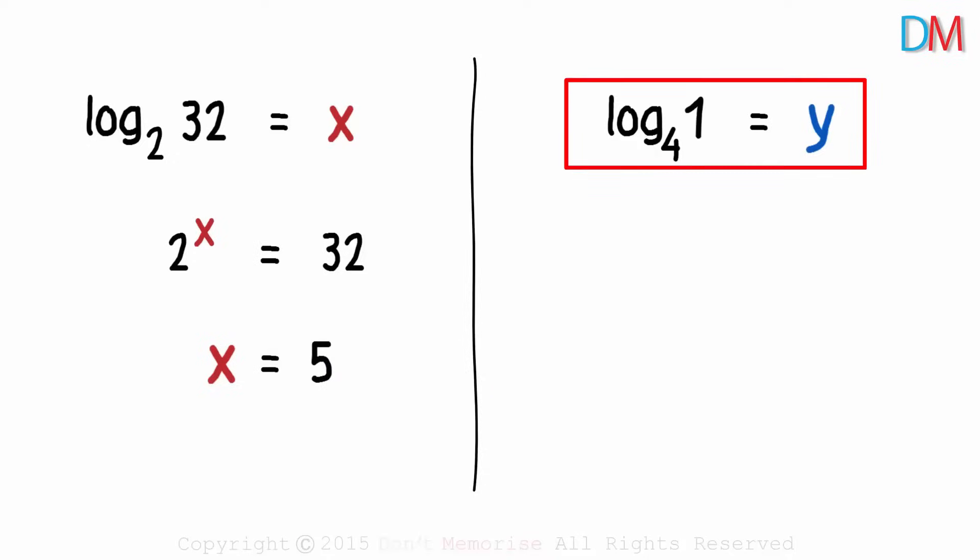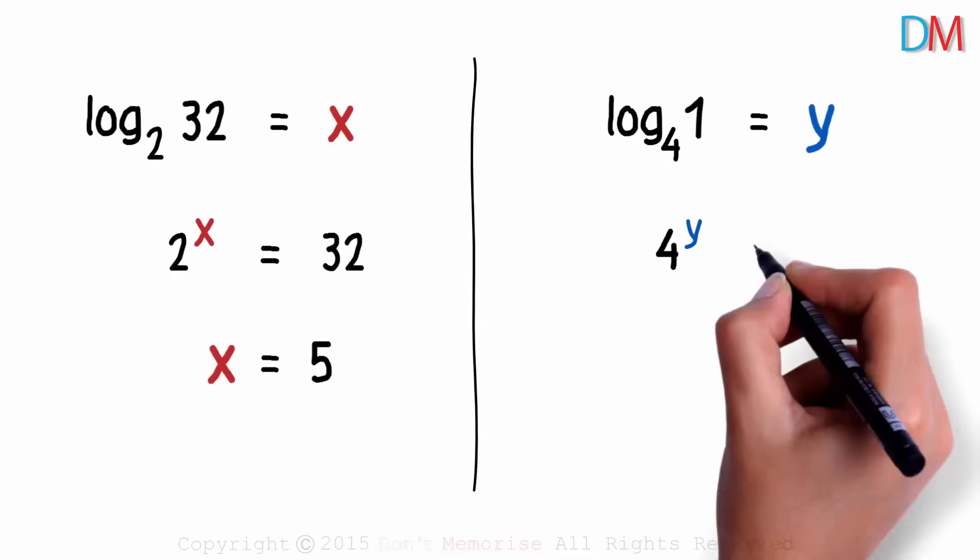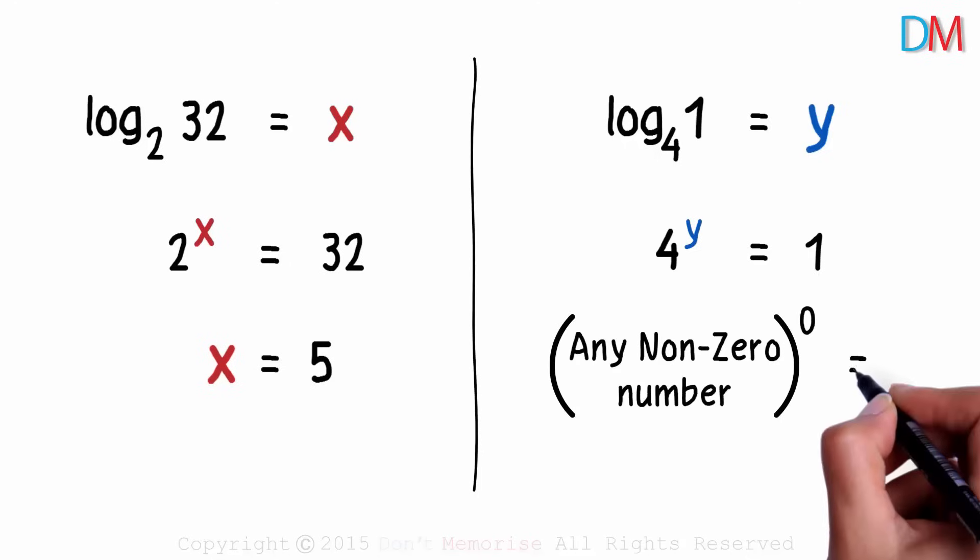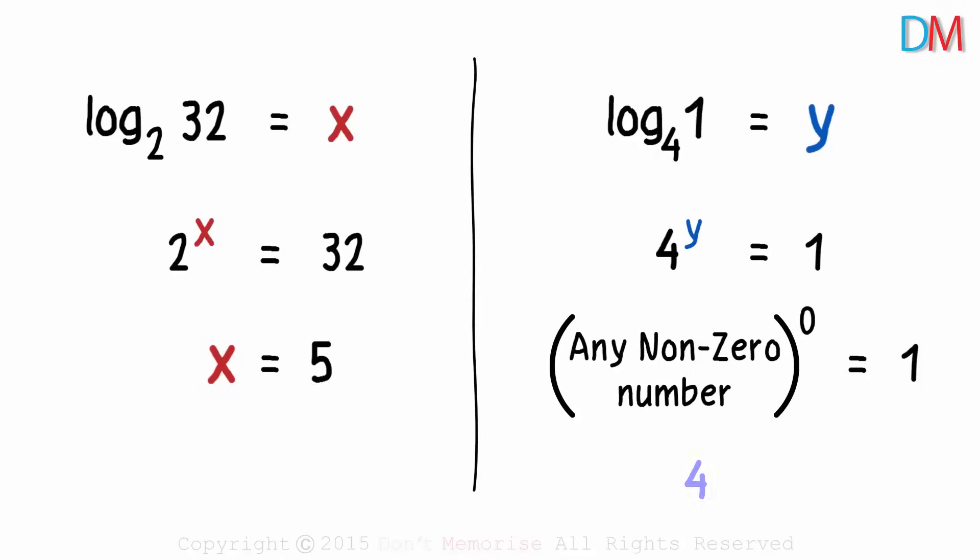The second one is bit interesting. The equation can be written as 4 raised to y is equal to 1. 4 to what power will result in 1? Do you remember a property of exponents? Any non-zero number raised to 0 will result in 1. Hence 4 raised to 0 will equal 1. The value of y is 0.